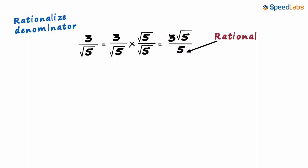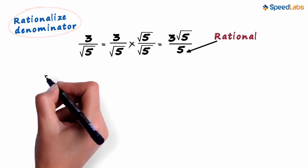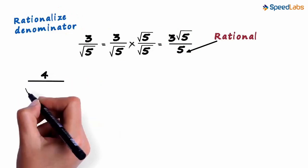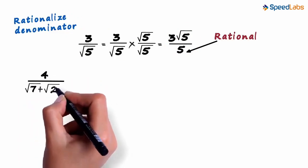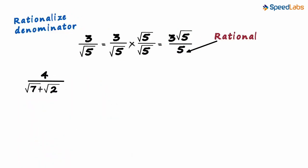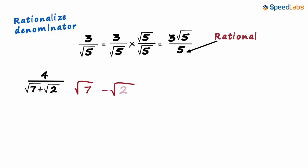The second example asks us to rationalize the denominator of 4 divided by √7 plus √2. To rationalize the denominator, all we have to do is change the sign in between. The sign here is plus, so the rationalizing factor of the denominator will be √7 minus √2.